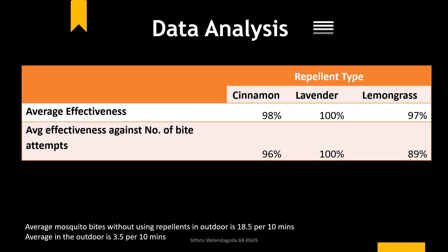After analyzing the data, these are the findings and results. Average effectiveness against bites: cinnamon 98%, lavender 100%, lemongrass 97%. Average effectiveness against number of attempts: cinnamon 96%, lavender 100%, lemongrass 89%.